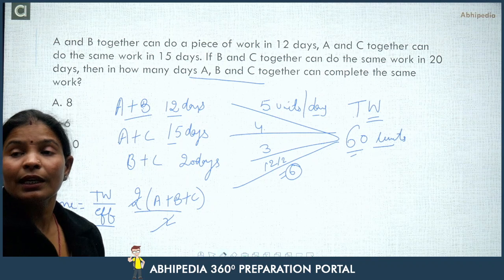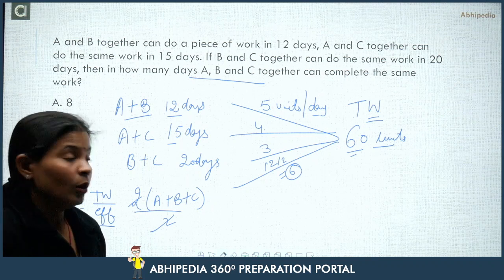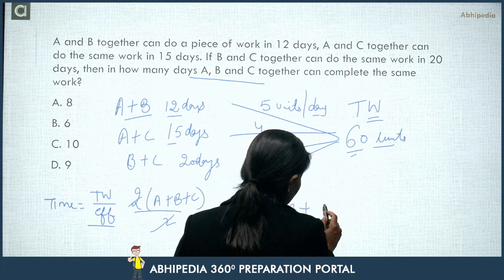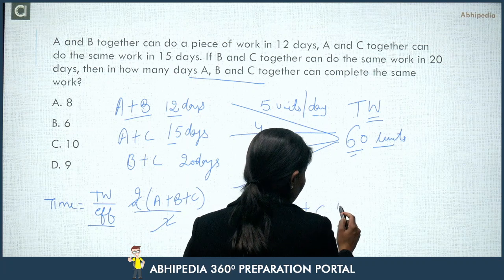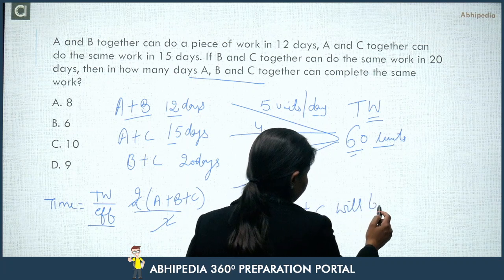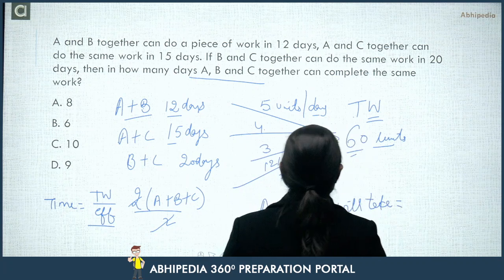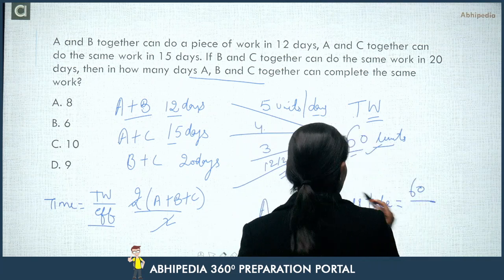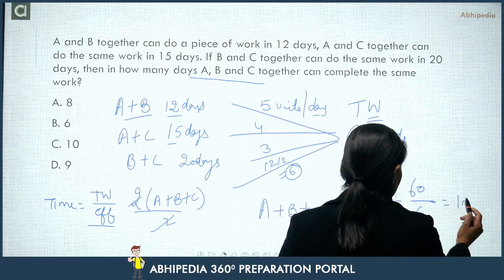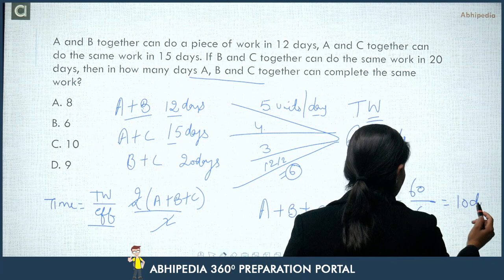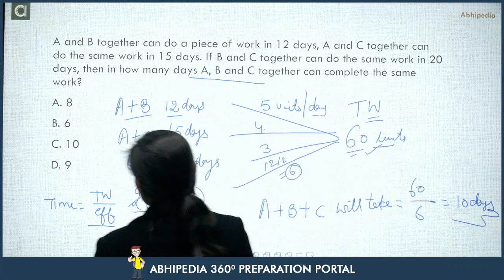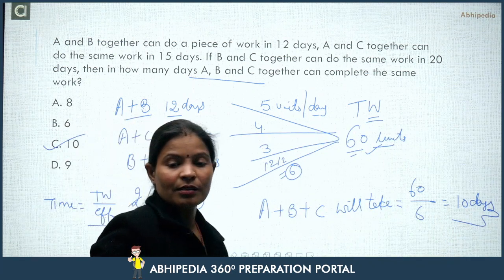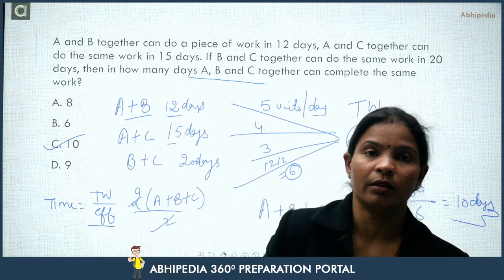Now, how much time will A, B, and C take together? Time = Total Work / Efficiency of A+B+C = 60 / 6 = 10 days. I hope everyone has clarity; if there is any minor doubt, you can comment in the comment section.